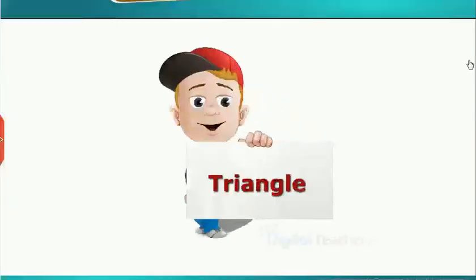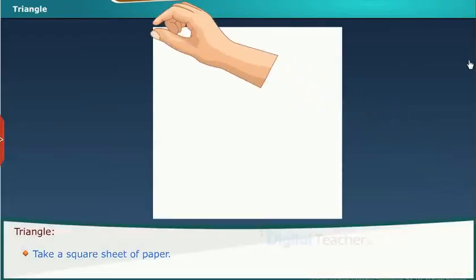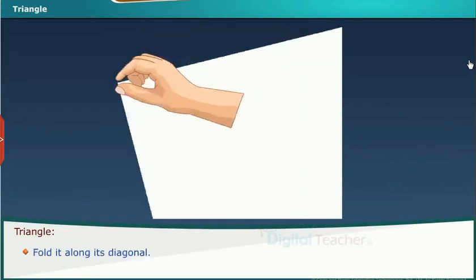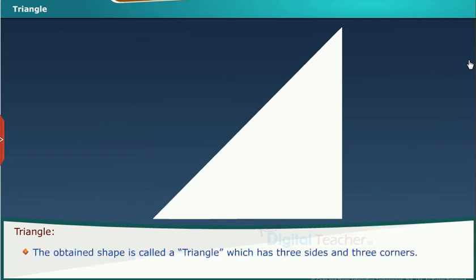Now let us make a triangle using the square paper. Take a square sheet of paper. Fold it along its diagonal. The obtained shape is called a triangle, which has three sides and three corners.